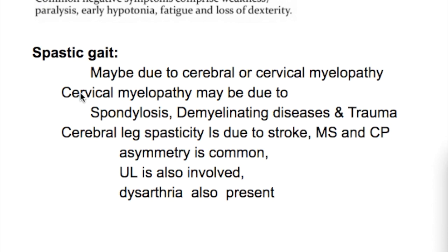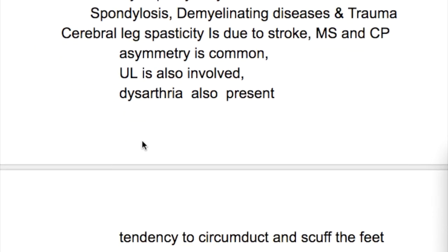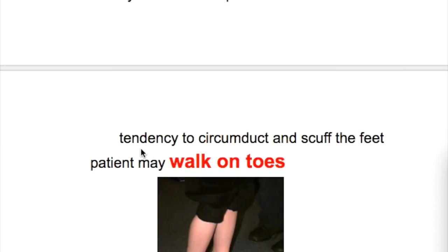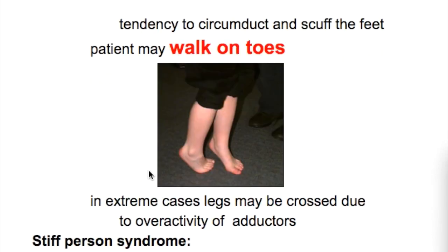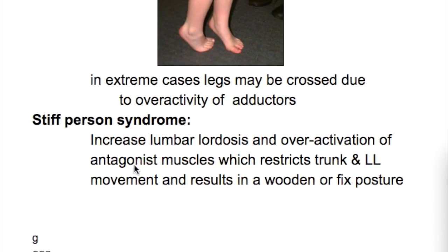Spastic gait may be due to two causes: cerebral or cervical myelopathy. Cervical myelopathy may be due to spondylosis, demyelinating diseases, or trauma. Cerebral leg spasticity is due to stroke, multiple sclerosis, or cerebral palsy. Symptoms include dysarthria, a tendency to circumduct and scuff the feet, walking on toes, and in extreme cases legs may be crossed due to overactivity of the adductors.